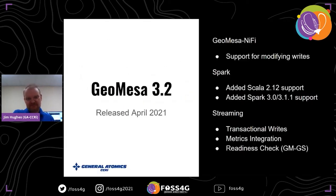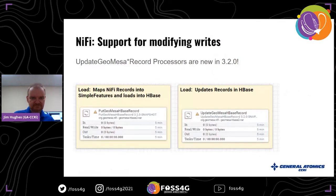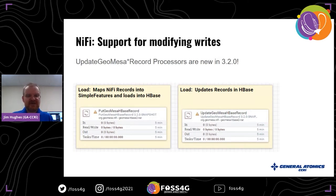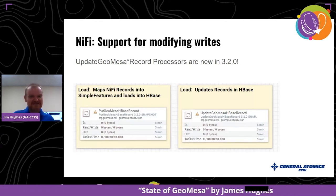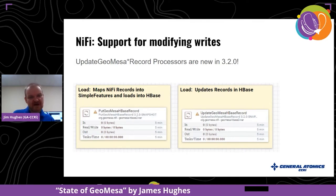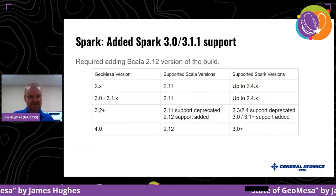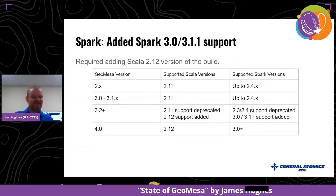That covered some of the stuff from GeoMesa 3.0 and 3.1. In 3.2 we've got another handful of things. In GeoMesa NiFi we've added support for modifying writes. This processor lets us update data in a back-end like Accumulo or HBase — we can look up a record by feature ID and replace it in the database. In big data we don't do too much updating, but that option is now there. One of the big things in GeoMesa 3.2 is we added support for Spark 3.